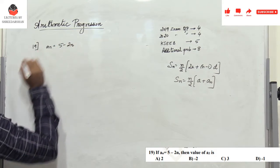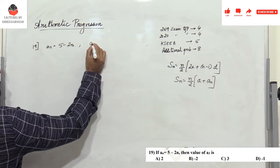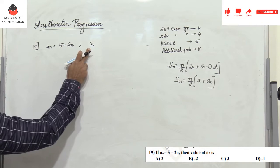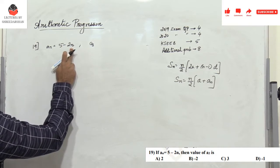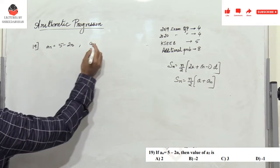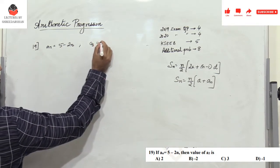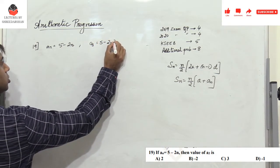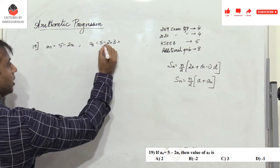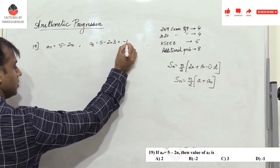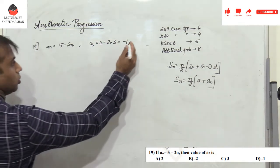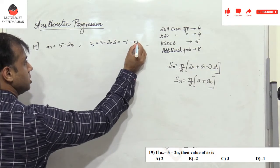Problem 19: aₙ = 5 - 2n, find a₃. Substitute n = 3: 5 - 2×3 = 5 - 6 = -1. Option D is the right answer.